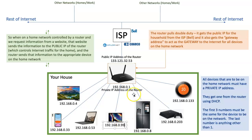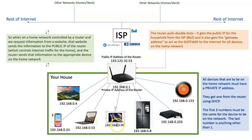The only number that can't be used for the last digit is one, because one is reserved for the router itself — that's the gateway address. Every device on the network knows that to send information out to the internet, it sends it to the router first, and then the router sends it out. That process is called DHCP, Dynamic Host Control Protocol. All it means is that new devices contact your router, and your router randomly picks an IP address and gives it to the new device as long as it knows the password.